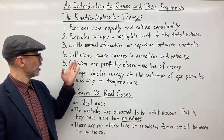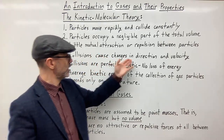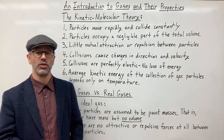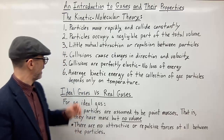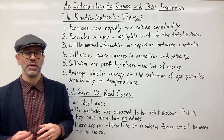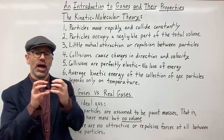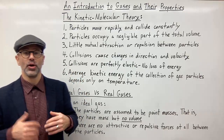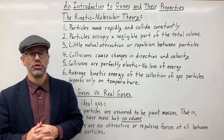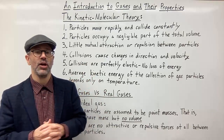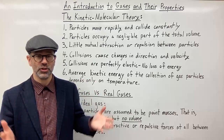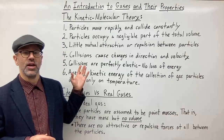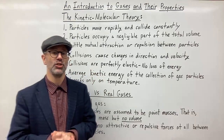Number four: collisions are going to change the direction and velocity of the particles. And five: collisions are going to be perfectly elastic. What does that mean? It means when things collide, there's no loss of energy during the collision. Normally if you have a car crash, there is loss of energy due to sound energy, crumpling of the cars, or production of heat. But in this case we're assuming perfectly elastic collisions — there's no loss of energy.